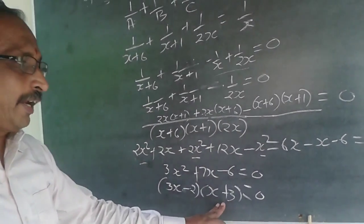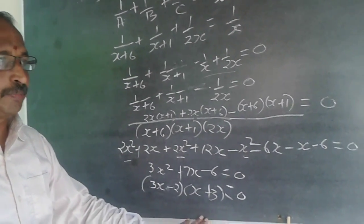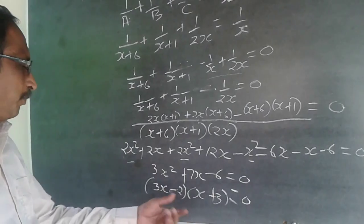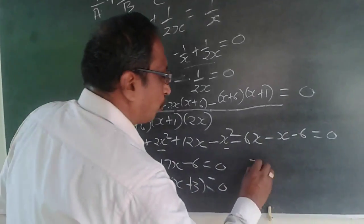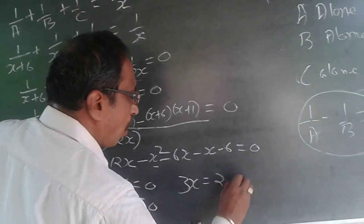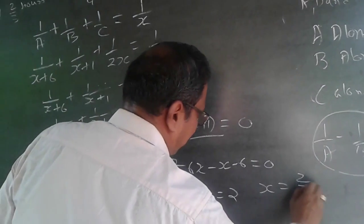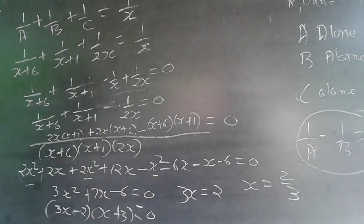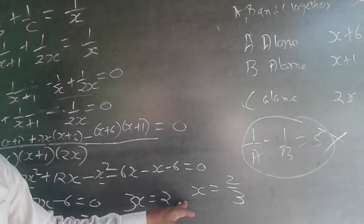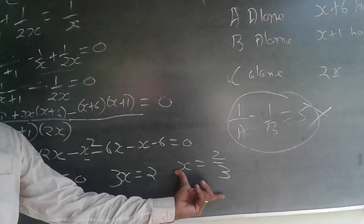So x equals minus 3 — negative answer is not possible. Therefore 3x = 2, giving x = 2/3. The time taken for all three working together is 2/3 hours.